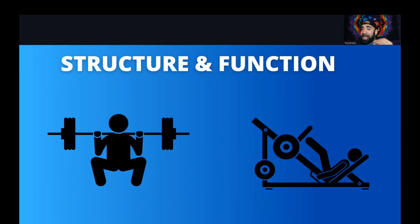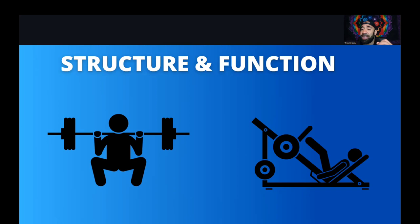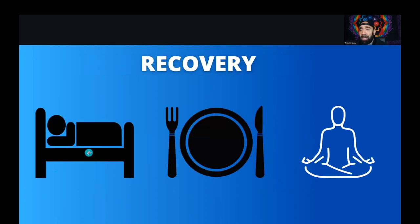Structure equals function — the way you're built determines how you should train. A taller athlete, six foot or more, might not do well at a barbell squat because they have a long torso and long femur and it just doesn't fit right. A good alternative would be the leg press, or even a Smith machine squat, which might be safer for them. Structure determines function.